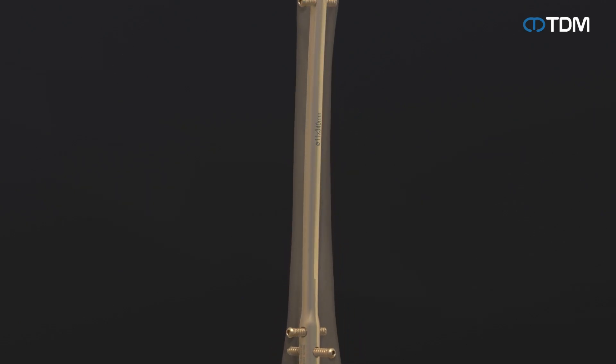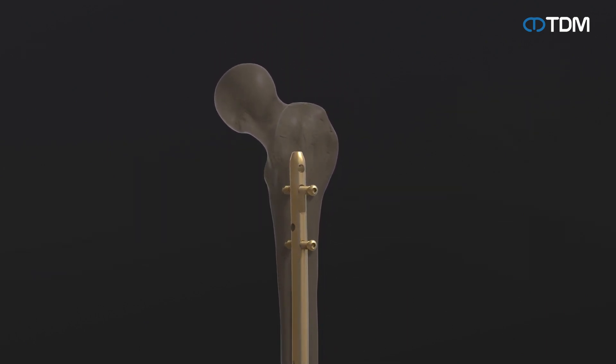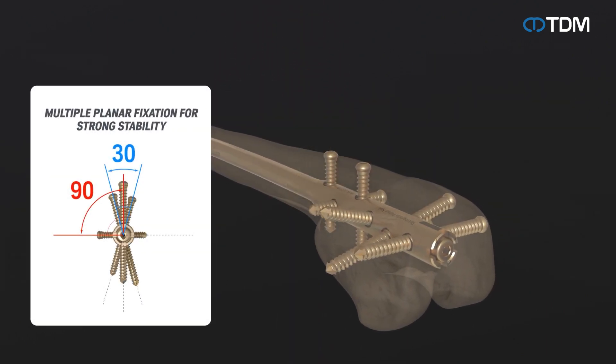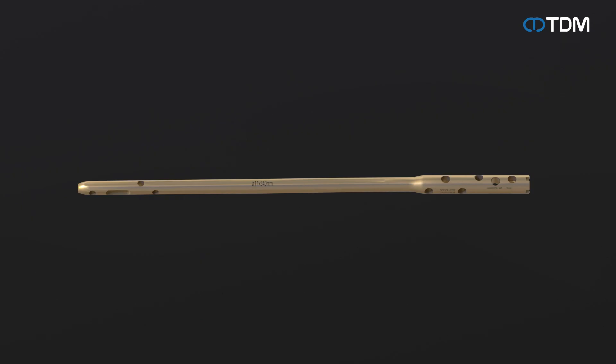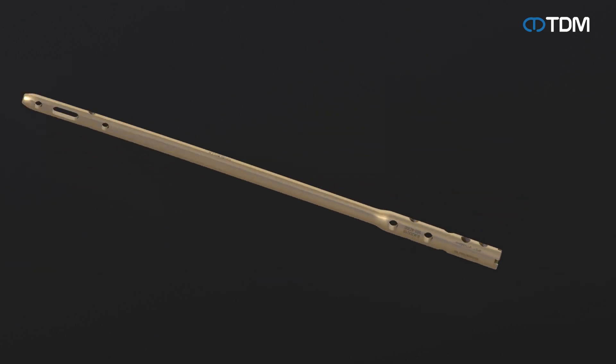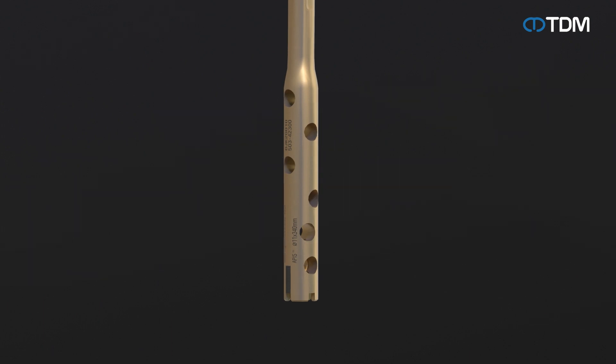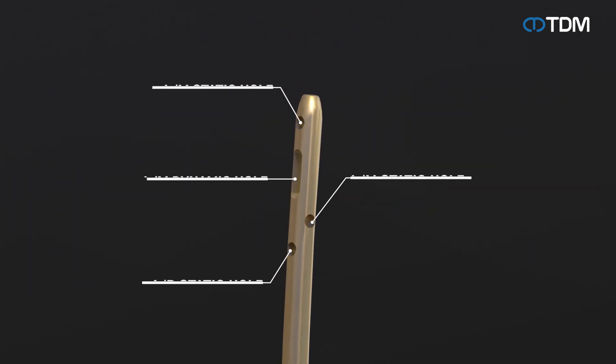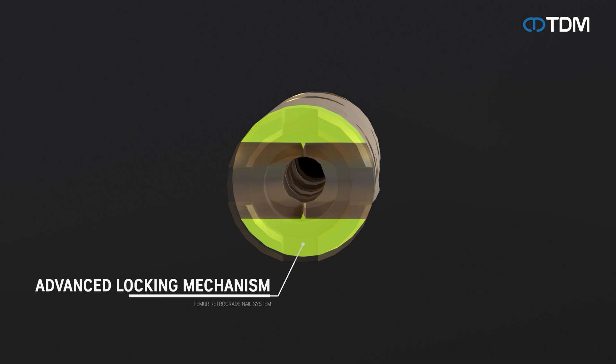The femur retrograde nail system is used for cases such as femoral shaft fractures, multiple fractures, and fractures after arthroplasty. The nail is made of titanium alloy and has a banding shape to match the shape of the femur. It consists of six distal screw holes and four proximal screw holes. The screw hole is a semi-locking hole mechanism to prevent loosening, enabling more stable treatment.